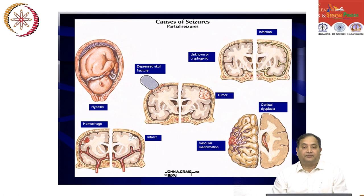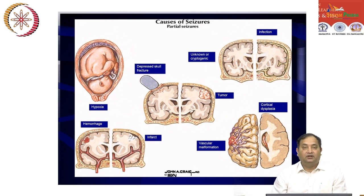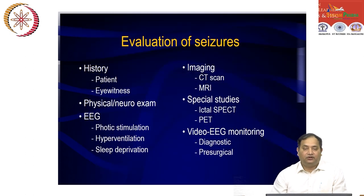Looking at the etiology of partial seizures: during birth, if there is a history of hypoxia due to obstructive labor, or history of trauma, hemorrhage, or traumatic brain injury, or sometimes cryptogenic causes, CNS infections, tumors, or genetic factors linked to epilepsy such as vascular malformation or cortical depression. Sometimes the etiology is unknown.